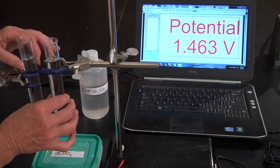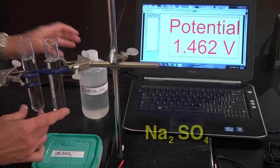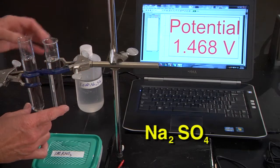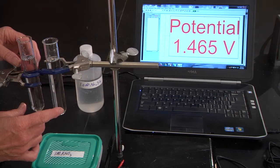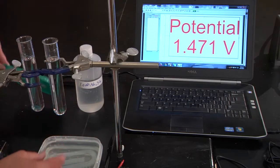So what we have in two test tubes are solutions of sodium sulfate, and those are not going to react, but they're going to give us a charged particle so that we can have a flow of electrons.